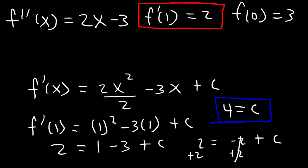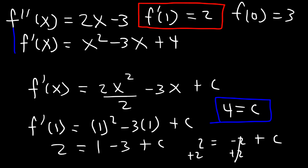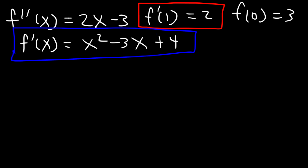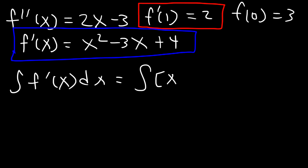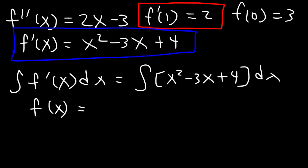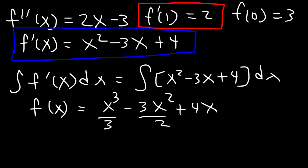So now we can write the equation for f'(x): f'(x) is equal to x squared minus 3x plus 4. But we need to go all the way to f(x), so let's integrate both sides again. The antiderivative of f'(x) equals the antiderivative of x squared minus 3x plus 4, which gives us f(x) equals x cubed over 3 minus 3x squared over 2 plus 4x. Instead of using c again, we'll use a different constant of integration — let's call it d.